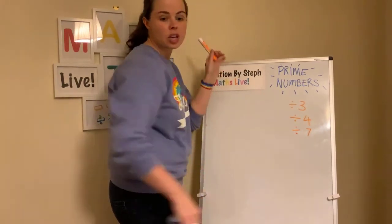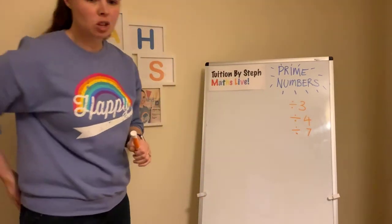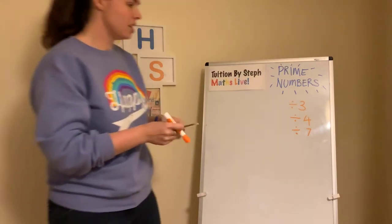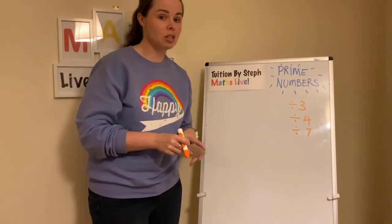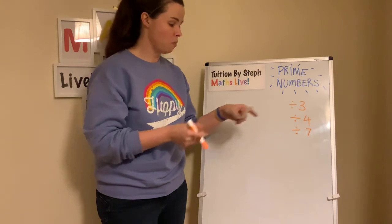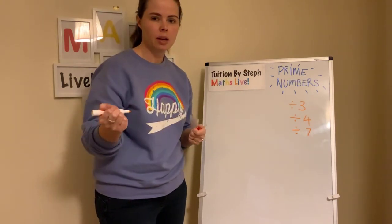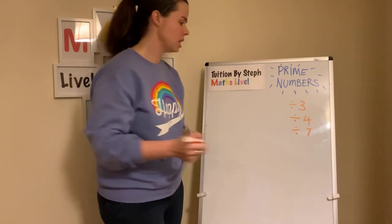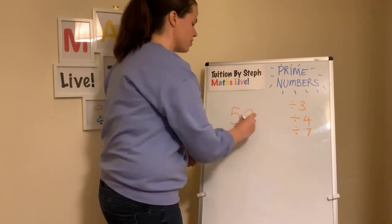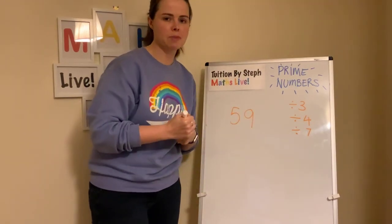That is what you do — any number you've got, you just divide it using bus stop to see if it's in one of those times tables. Here's your challenge: fifty-nine. Is fifty-nine a prime number? Have a go.